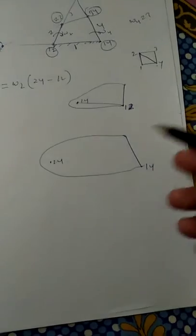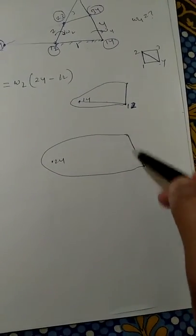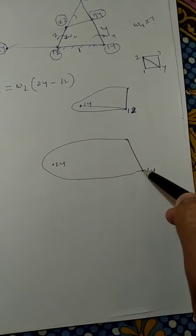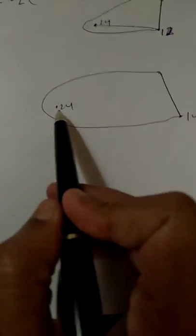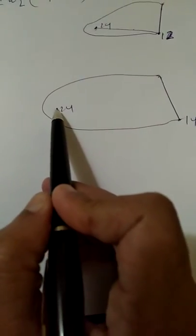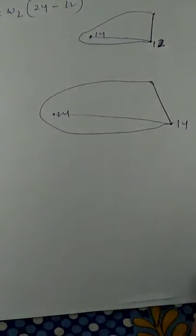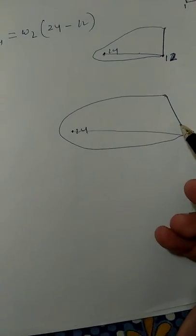And we know that this whole link 4 is rotating about this point. So we have to find the velocity of I24.